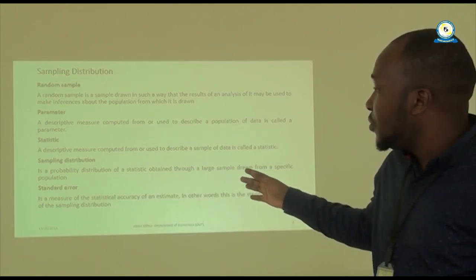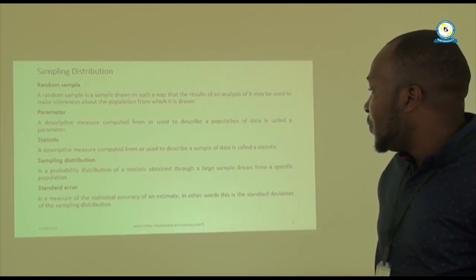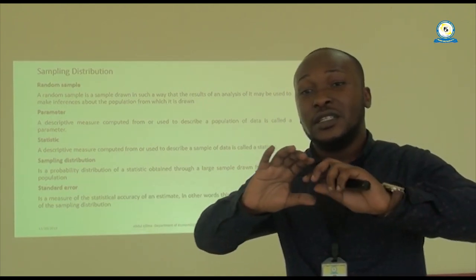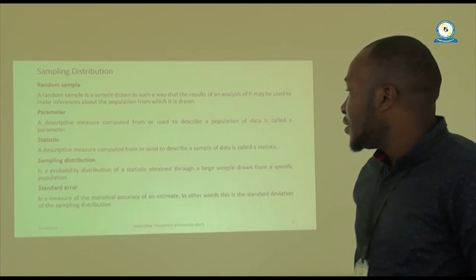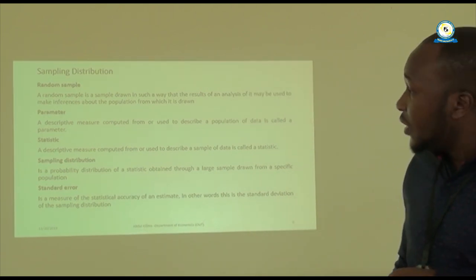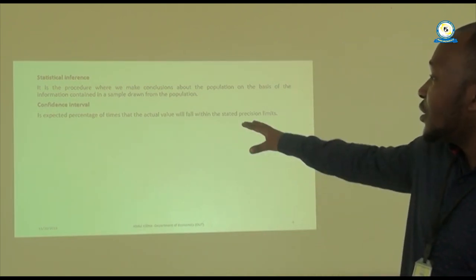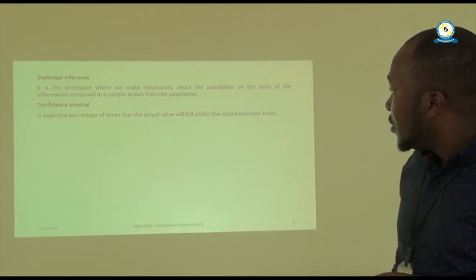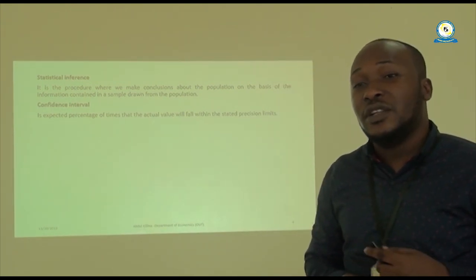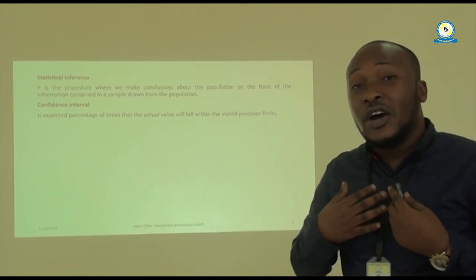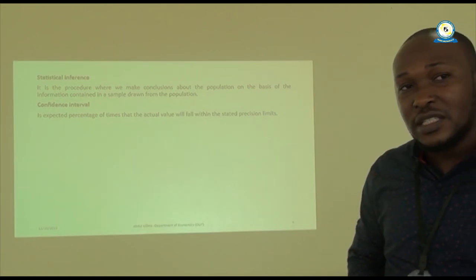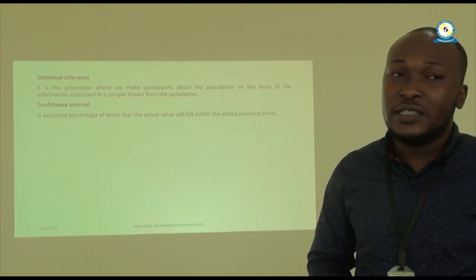A sampling distribution is the probability distribution of a statistic — you want to see how that statistic is distributed. Standard error is the statistical accuracy of an estimate; in other words, it is the standard deviation of the sampling distribution. Statistical inference means making a conclusion about the whole population. A confidence interval is the expected percentage of times that the actual value will fall within a certain precision — for example, being 95%, 90%, or 99% confident that results will occur a certain way.